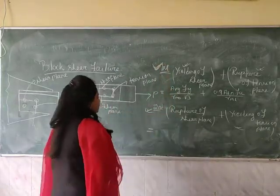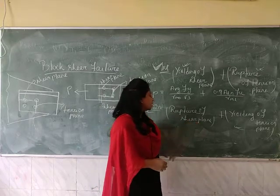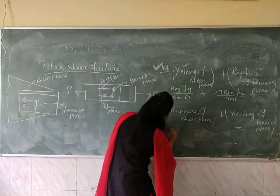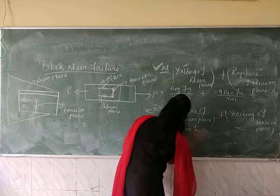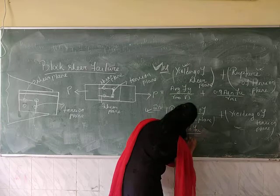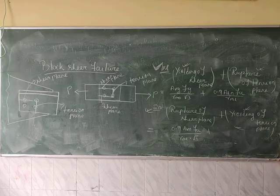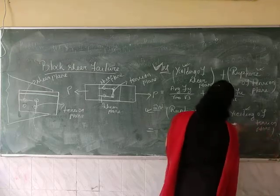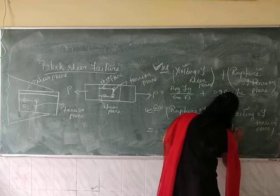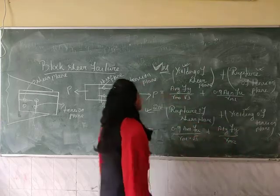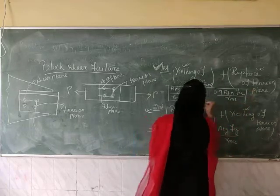For the second combination — rupture of shear plane — the formula is: 0.9 × Avn × Fu / (γm1 × √3), plus yielding of tension plane, which gives: Atg × Fy / γm0. These are the two formulae to calculate the block shear strength, giving Tdb1 and Tdb2.